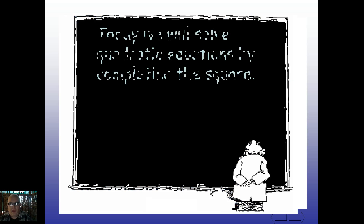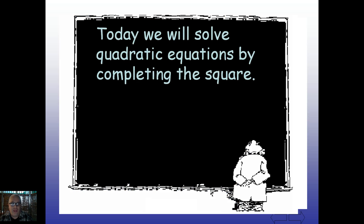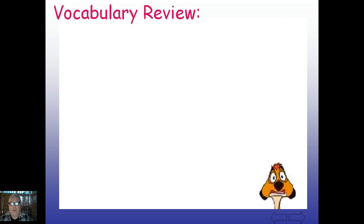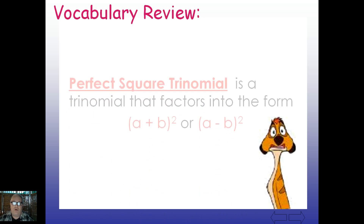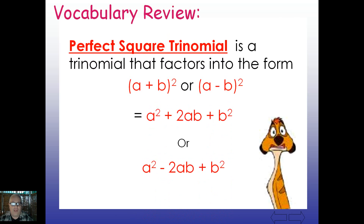We're still in Standard 14, and today we will again solve quadratic equations by completing the square. This time we're going to take the step beyond finding C. We saw previously where we cut B in half and then squared it to find C — we're going to be applying that now to full, complete equations. A quick vocabulary overview: a perfect square trinomial is the quantity A plus B squared, or the quantity A minus B squared, and we'll be using this idea as we go forward today.